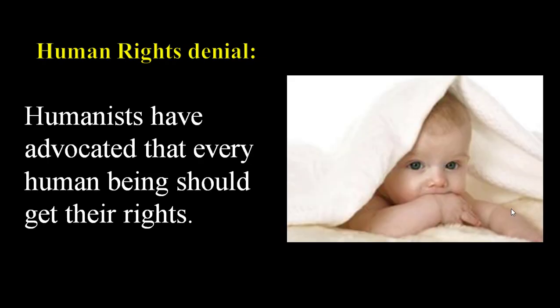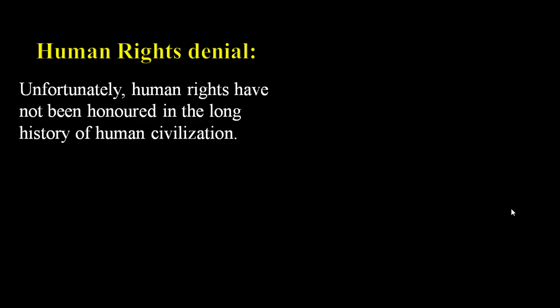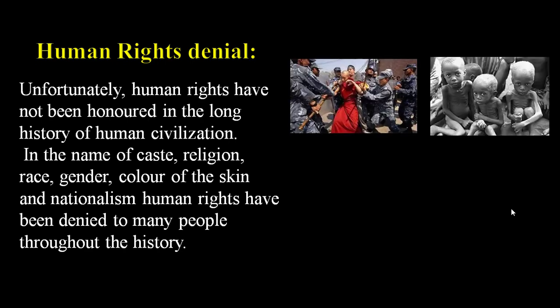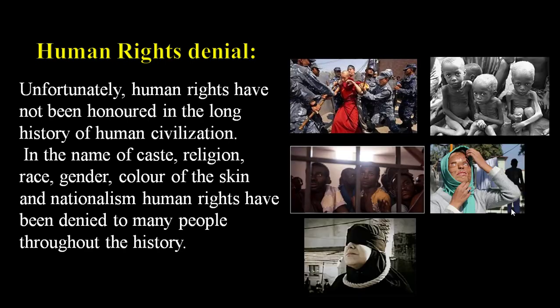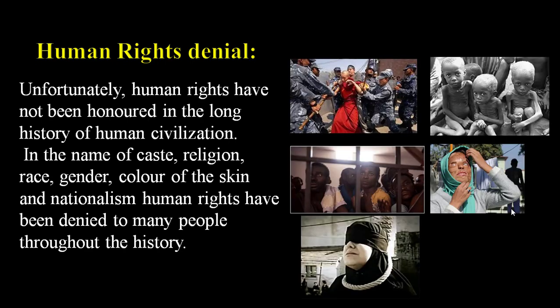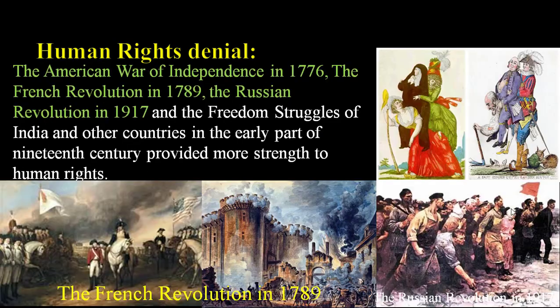The first global problem is human rights denial. Humanists have advocated that every human being should get their rights. Unfortunately, human rights have not been honored in the long history of human civilization, because in the name of caste, religion, race, gender, color of skin and nationalism, human rights have been denied to many people throughout history.